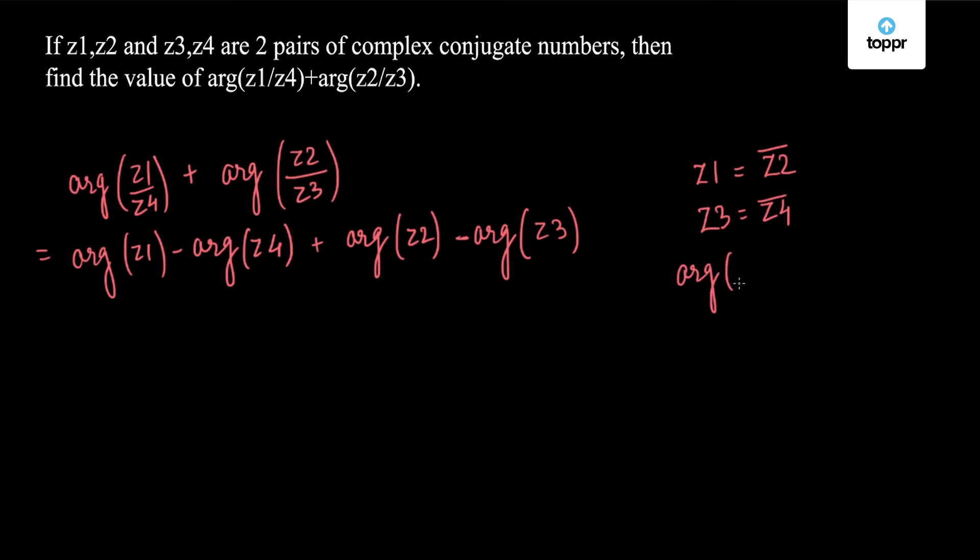So we know that argument of Z1 is equal to negative argument of Z2, and argument of Z3 is equal to negative of argument of Z4.